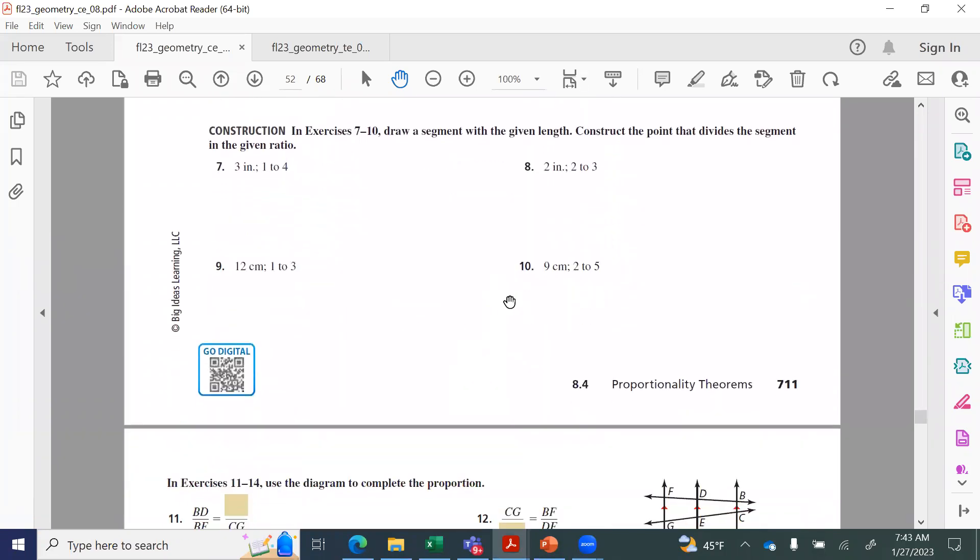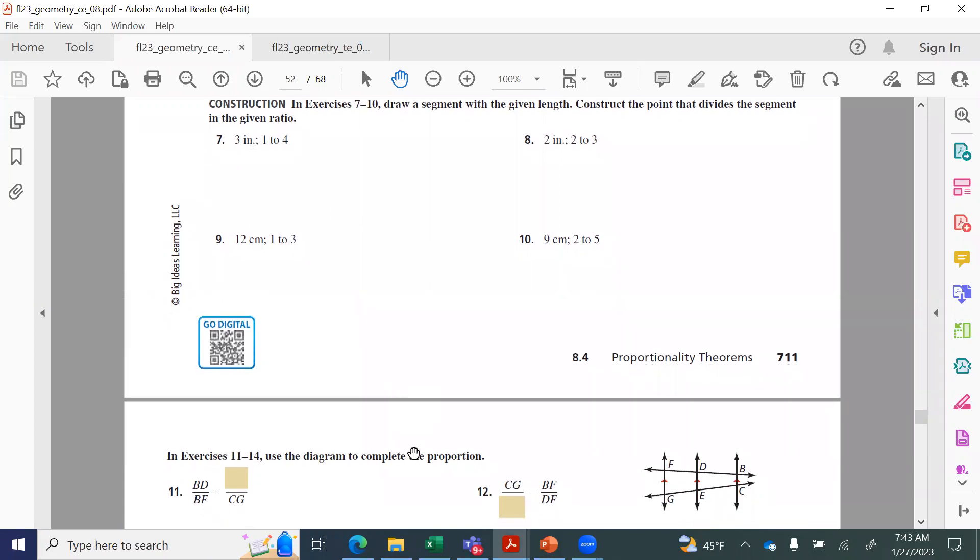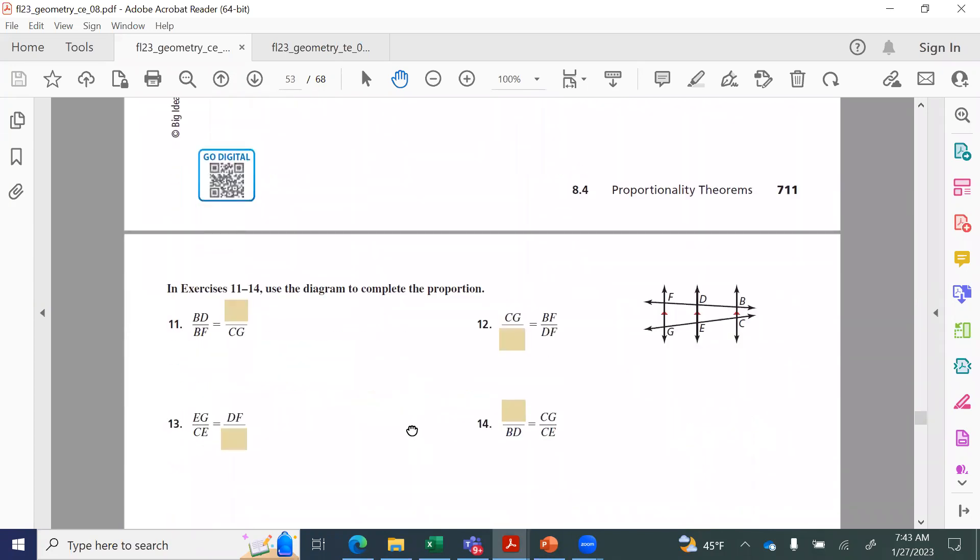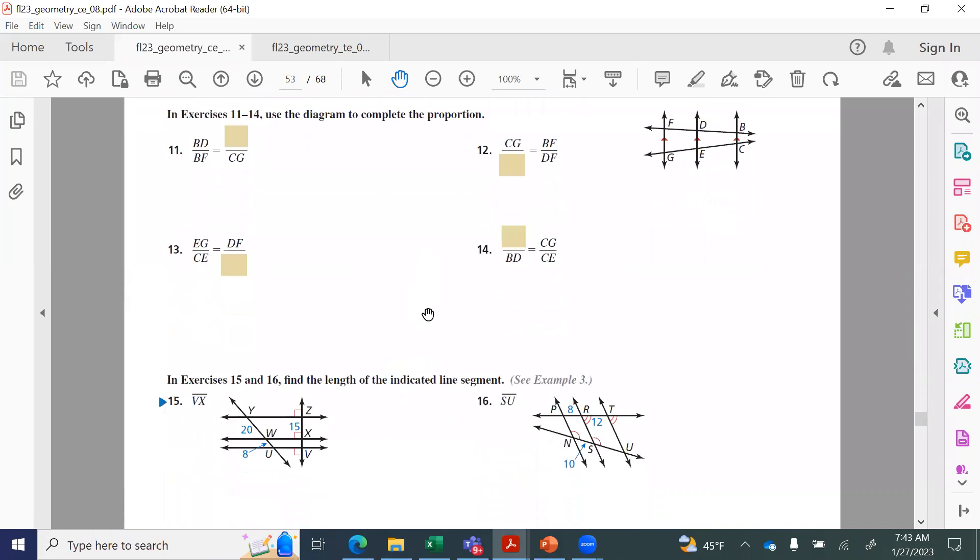All right, and if you need to go back and pause at any time, by all means do that. But I want this to be a fast thing just so you have plenty of time on the quiz. Again, it is only six questions. So constructions, all right, this is a part that you can skip. We did not do constructions. You do not need to do constructions for this section, so seven and nine we're going to skip past those.